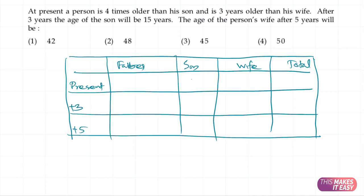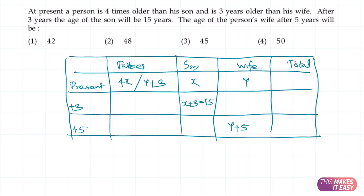Let's fill the blanks. At present the person is 4 times older than his son, so if the son's age is x, the father's age is 4x. The father is also 3 years older than his wife, so if the wife's age is y, the father's age is also y plus 3. After 3 years the age of the son will be 15 years, which equals x plus 3. We need to find the wife's age after 5 years, which is y plus 5.